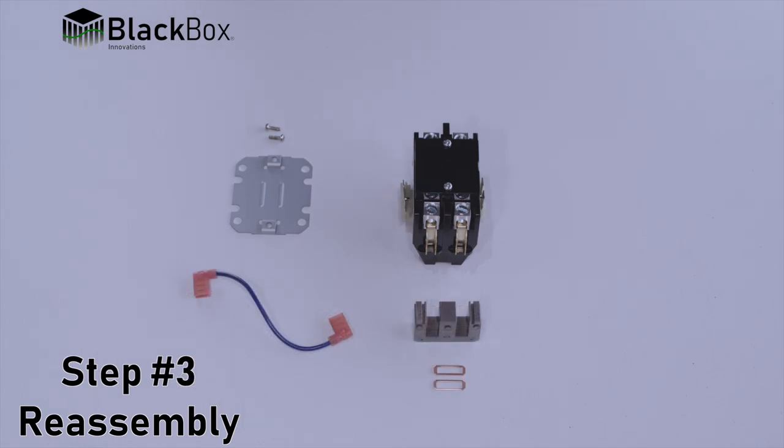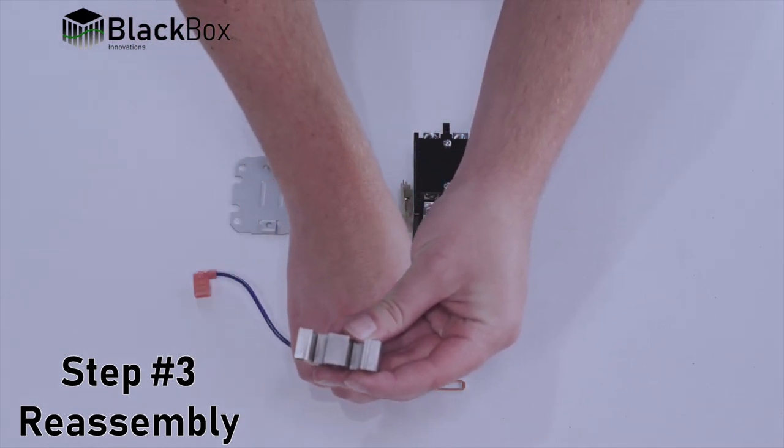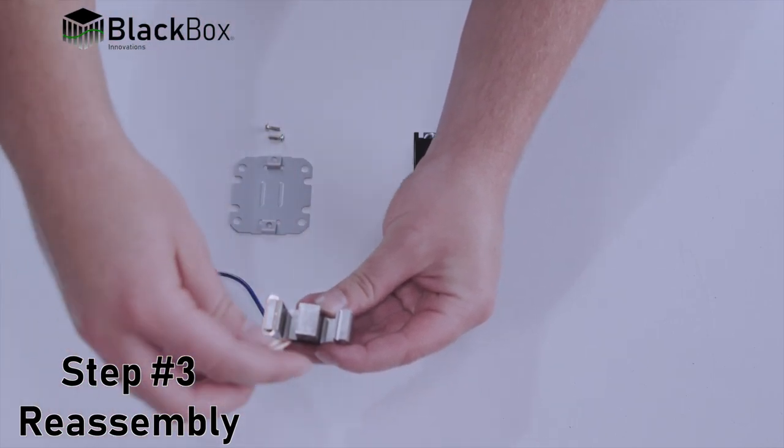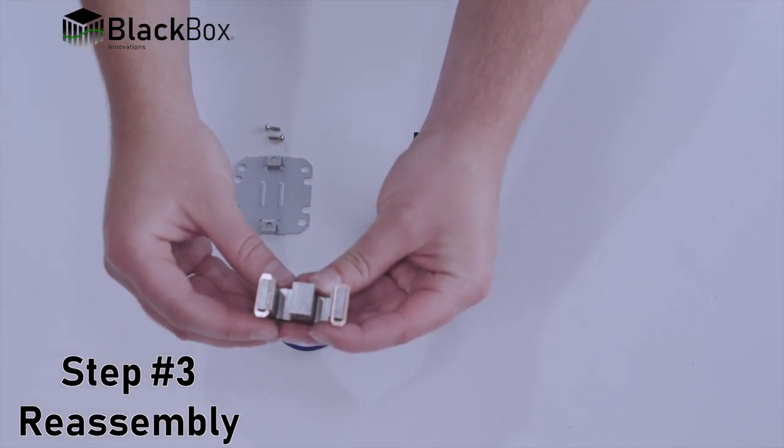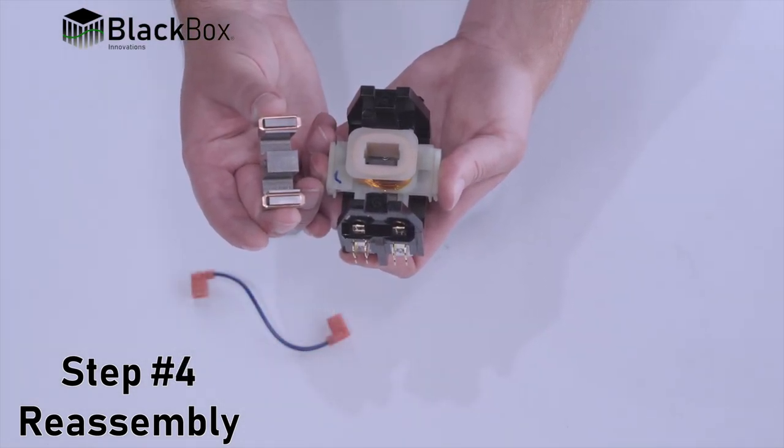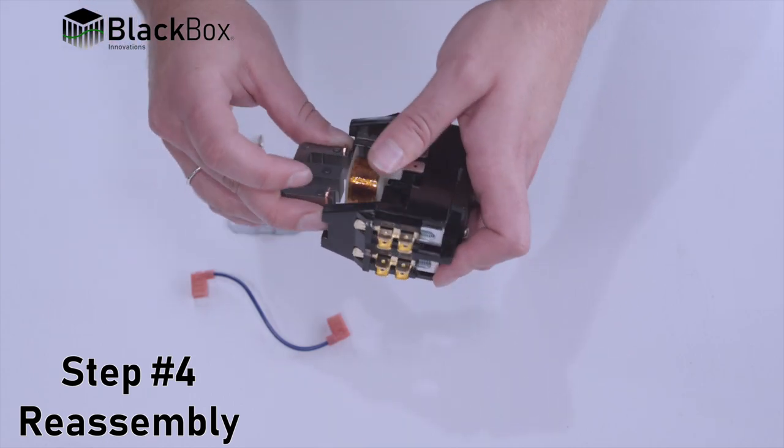Step three, install both copper shading coils back onto core seats. Step four, while holding assembly together, install core with shading coils onto contactor and coil assembly.